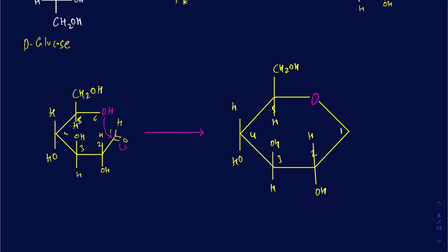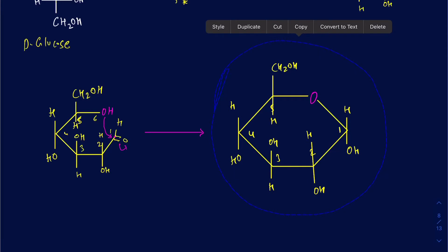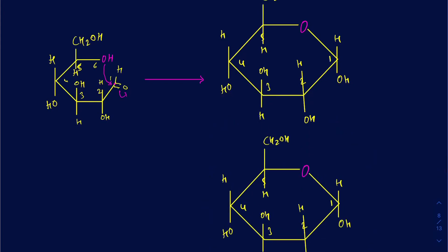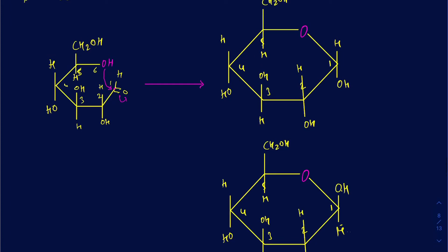When you make a new hydroxyl group, this hydroxyl group has two options — it could be either down or up. You get two different types of isomers. Everything else is oriented the same way going from 2, 3, 4, 5 — it's only going to be the position at the first carbon that differs. This first carbon is going to be called an anomeric carbon.